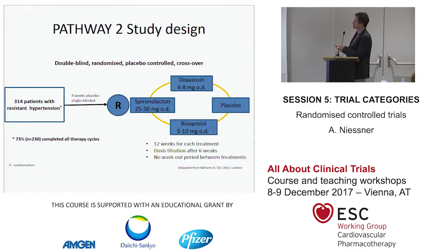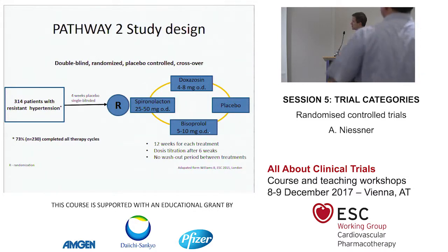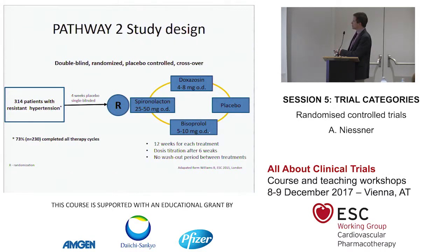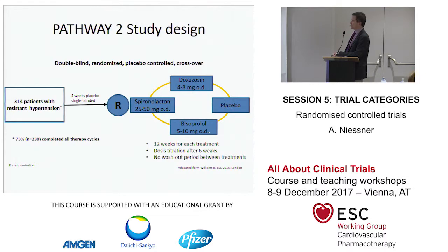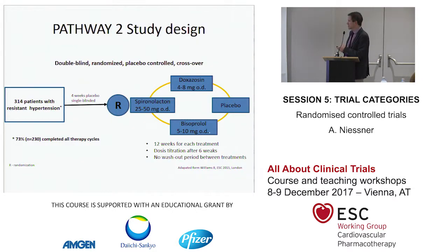The PATHWAY-2 study, presented in 2015, is a good example. They had only 314 patients with resistant hypertension who underwent four cycles of different antihypertensives and one placebo arm, with 12 weeks per treatment. They assumed no washout period was needed since blood pressure effects resolve after 12 weeks. There was a 27% dropout, so only 73% of patients could be analyzed, but they still achieved significant results.